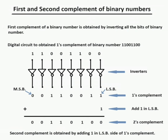Hello. First and second complement of binary numbers. First complement of a binary number is obtained by inverting all the bits of the binary number. Given the binary number 11001100, find the first and second complement.